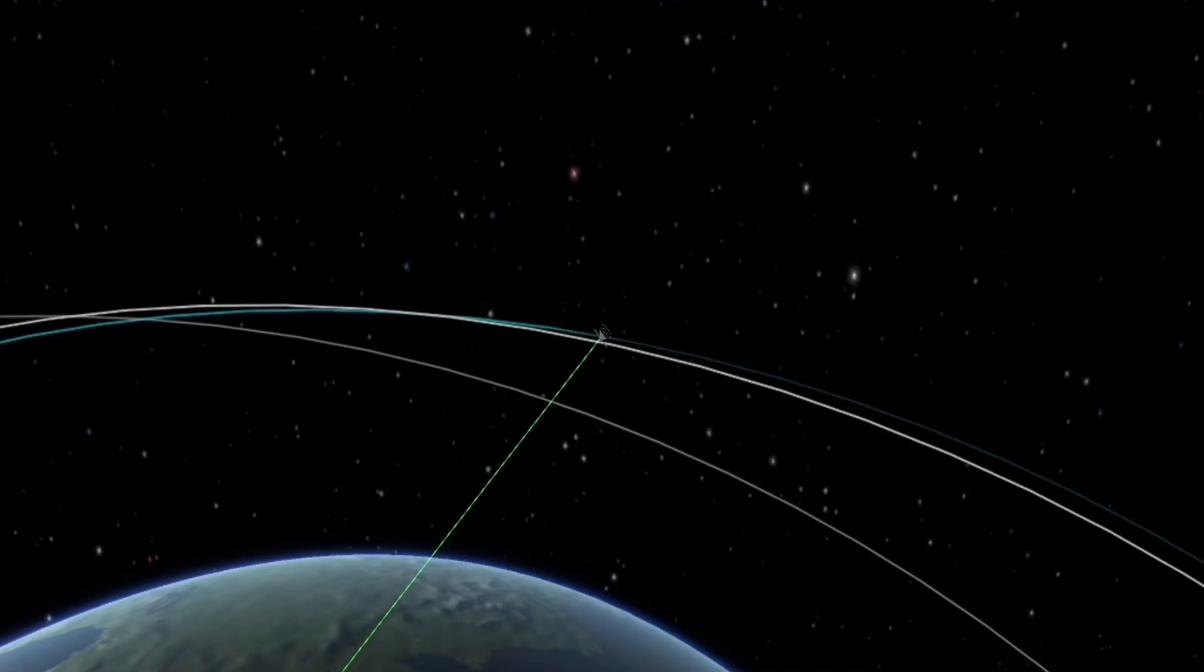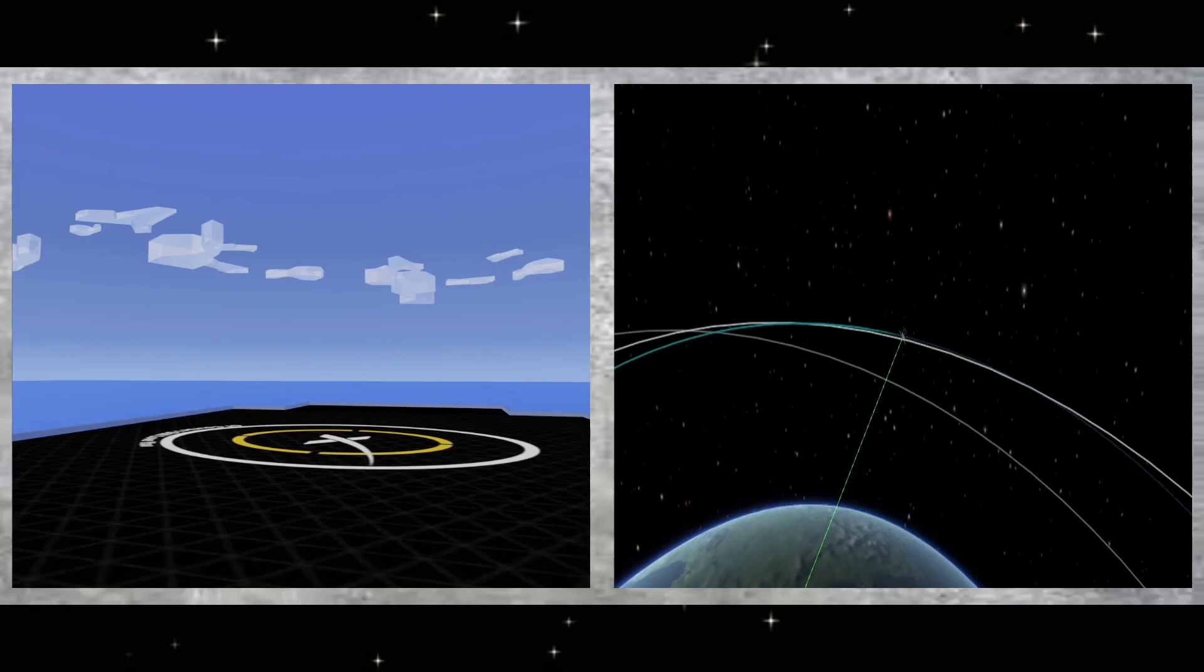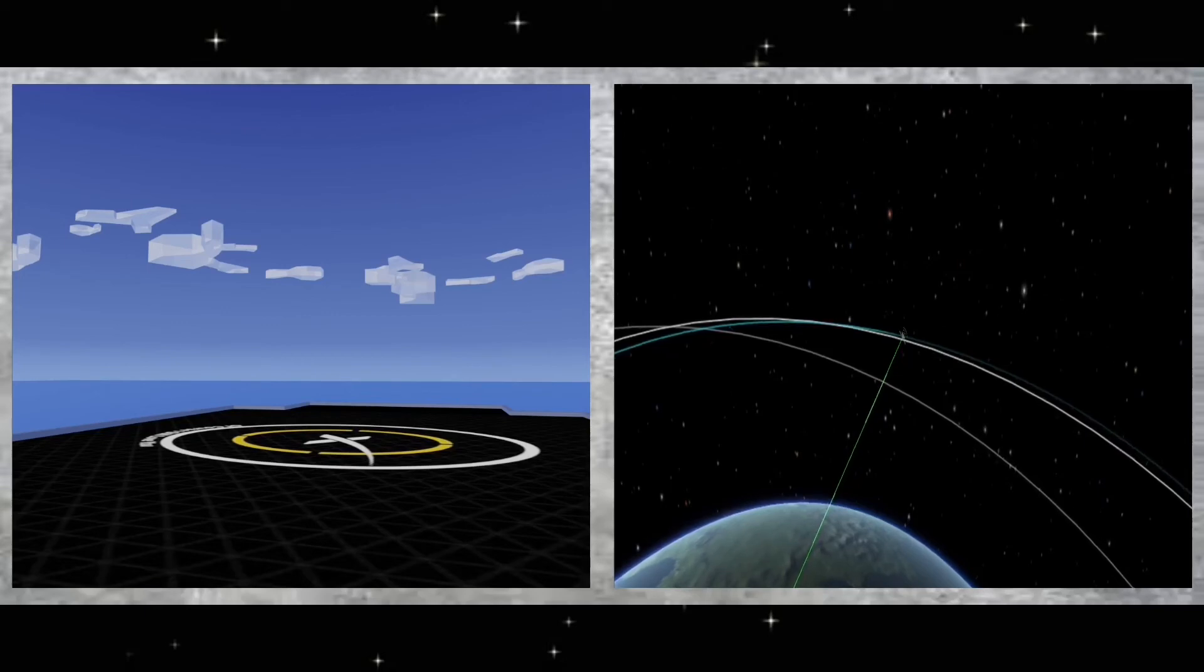On our drone ship, Of Course I Still Love You. That first stage has one more burn left, the landing burn, and it begins just before we touch down and provides the booster with a soft descent before we land. That should be starting up any time now. And we did get confirmation of the second stage that it did reach a good parking orbit.